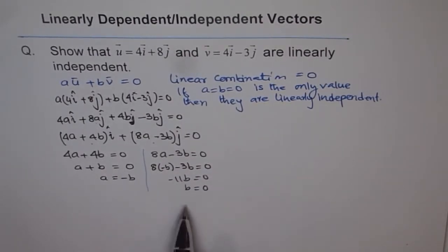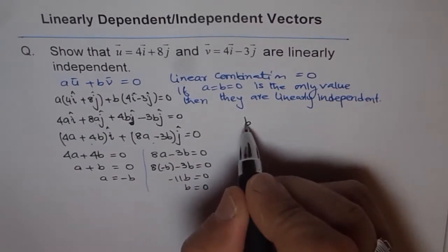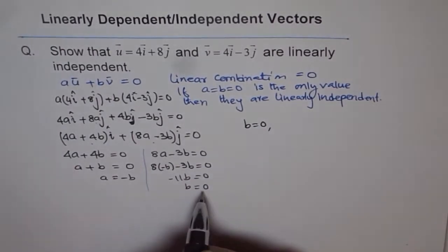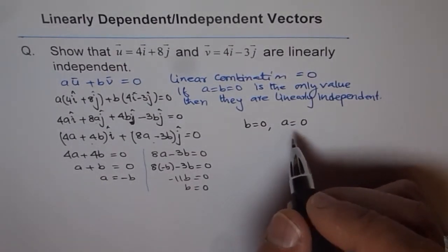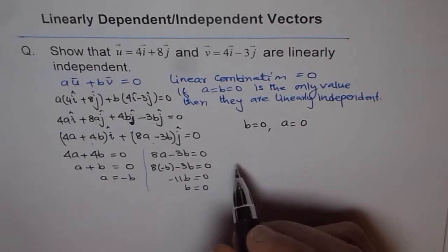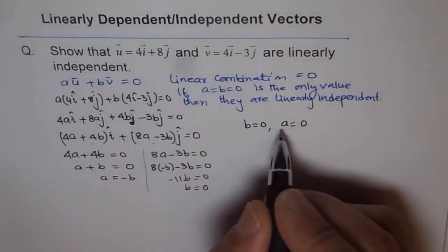Now from here what do we get? We get b equals 0, and if I put b is 0, then a is also equals 0. So the only value which satisfies this equation is when both a and b are 0.